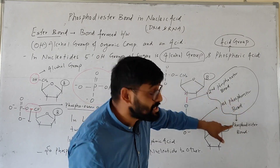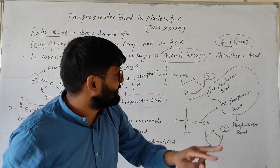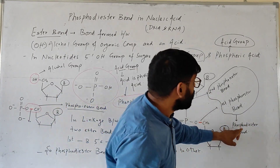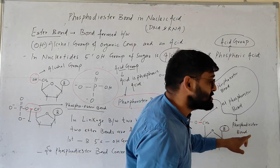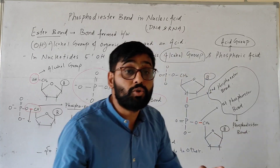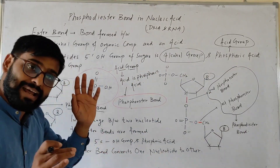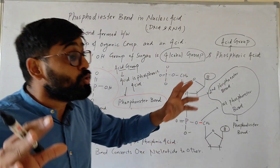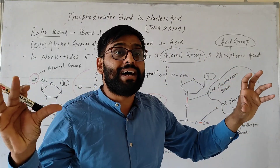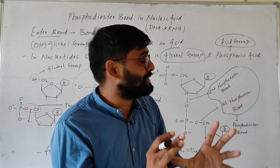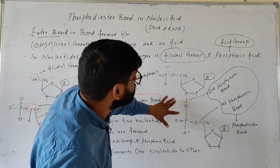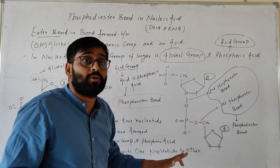Both of these bonds together are collectively called a phosphodiester bond. So you can see that in DNA and RNA, two nucleotides are linked together by a phosphodiester bond.